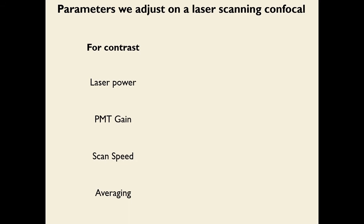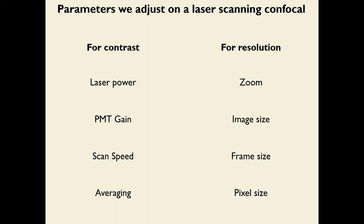The parameters adjusted on a laser scanning confocal to navigate these trade-offs fall into two groups. For contrast: laser power, photomultiplier tube gain, scan speed, and averaging. For resolution: zoom, image size, frame size, and pixel size.